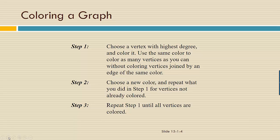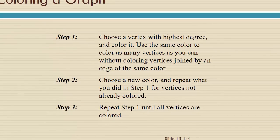When you're asked to color a graph, you should choose a vertex with highest degree and color it. Use the same color to color as many vertices as you can without coloring vertices joined by an edge of the same color. Then choose a new color and repeat what you did in step one for vertices that are not already colored. You're going to repeat step one until all the vertices are colored.